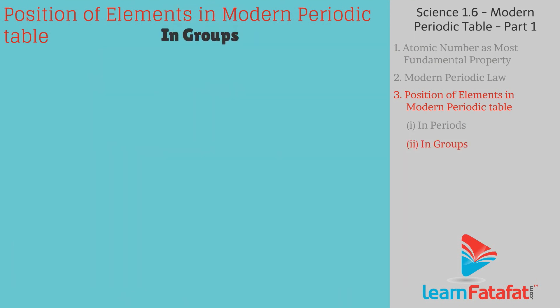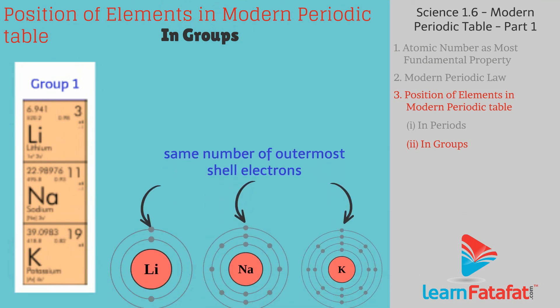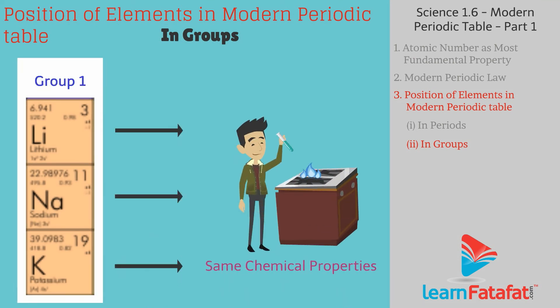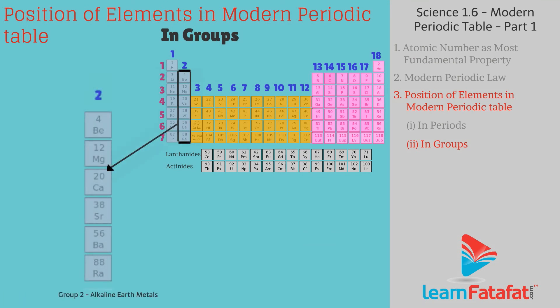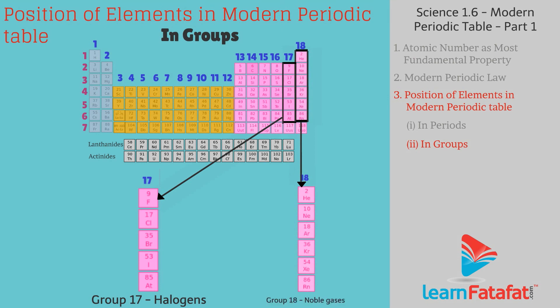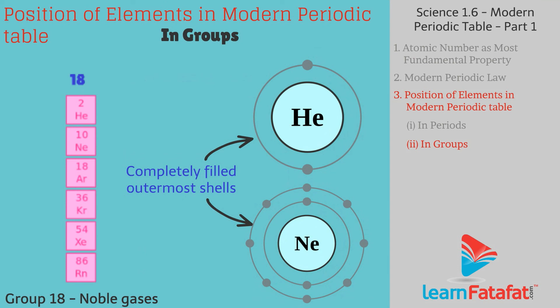In Groups: Elements of same group has same number of outermost shell electrons equal to number of the respective group. Elements of the same group show same chemical properties. Group 1 consists of alkali metals, group 2 contains alkaline earth metals, group 17 has halogens and group 18 has noble gases. Noble gases have completely filled outermost shells.